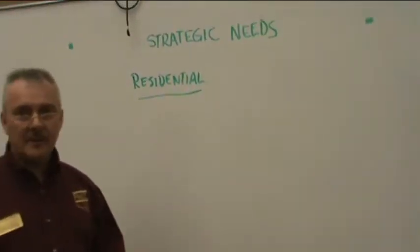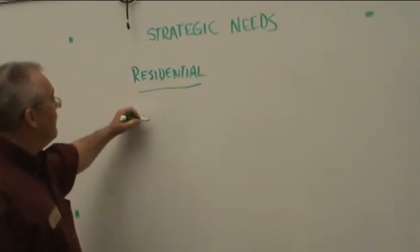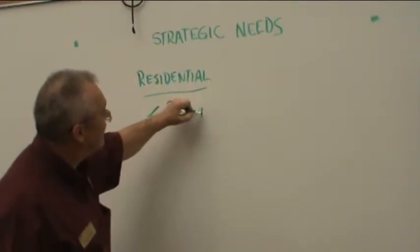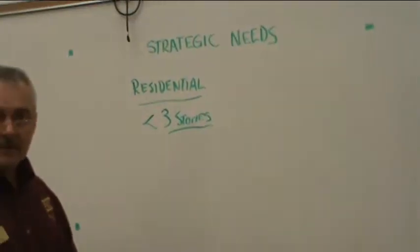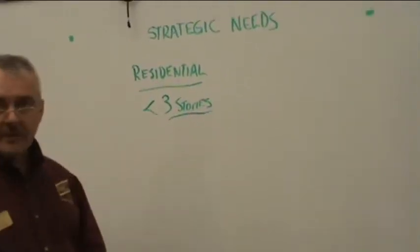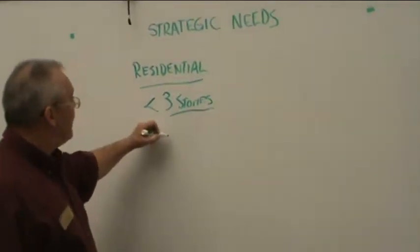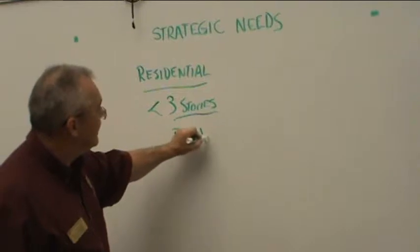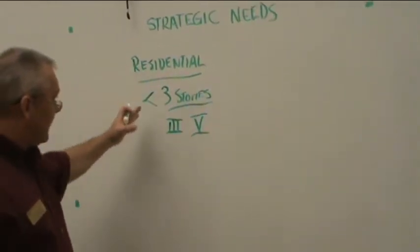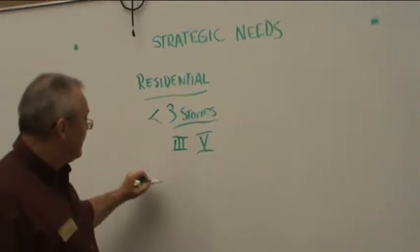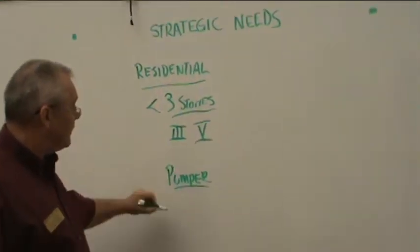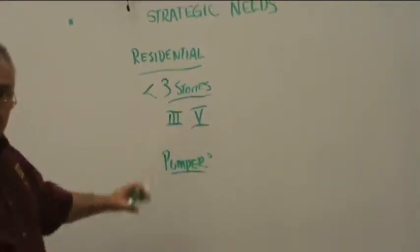Let's look at the demographics for my residential need. Residential in this particular community — most of my residences are less than three stories. This is demographic data that I collect from the building department, other information, and observation. Most of my residential applications are less than three stories, either type 3 or type 5 construction — ordinary or wood stick. My predominant resource is going to be my pumper. I know I'm going to need pumpers; they're going to be the backbone of my service.